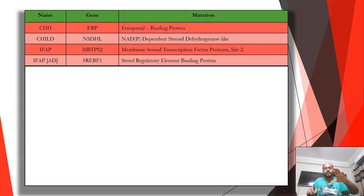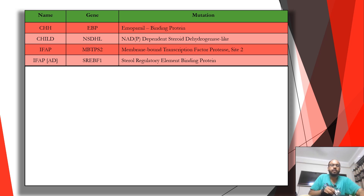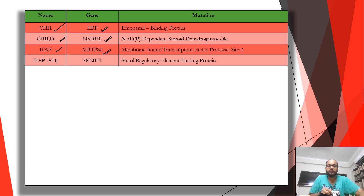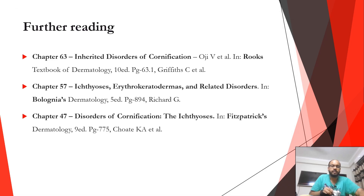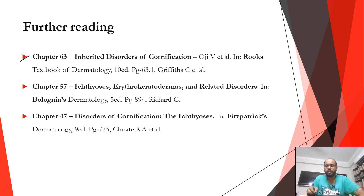A summary table covers the genetic mutations: In CHH, the EBP gene encodes emopamil-binding protein. In CHILD syndrome, the NSDHL gene encodes NAD-dependent steroid dehydrogenase-like protein. In IFAP, the MBTPS2 gene encodes membrane-bound transcription factor protease type 2. In autosomal dominant IFAP, the problem lies in SREBF1. These are the disorders summarized along with their affected proteins.